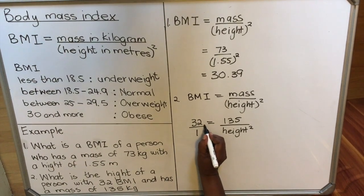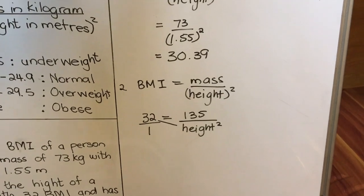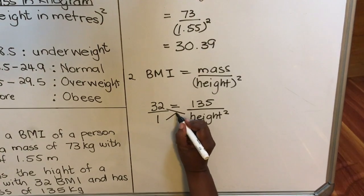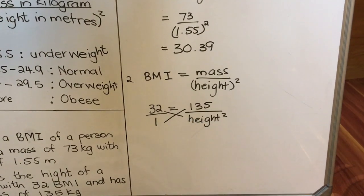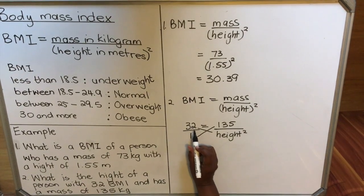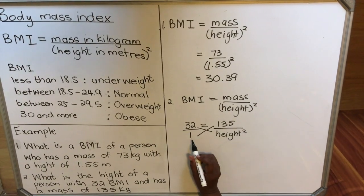What do I mean by that? You take the numerator of this side and multiply it with the denominator of the other fraction, and the denominator of this fraction multiplied by the numerator of the other fraction. Cross multiply: We're going to multiply the 32 with the height squared and multiply the 1 with the 135.